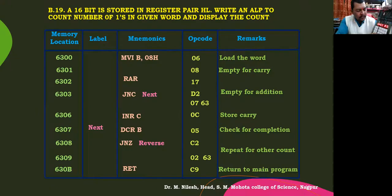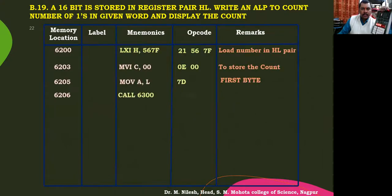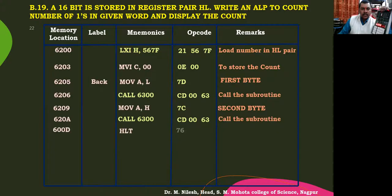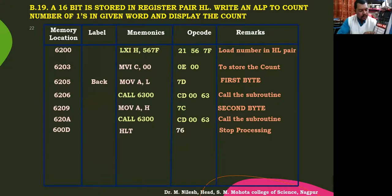Then the main program is to be written from memory location 6200. Reset, substitute memory 6200. This was the main program — it is the simplest program and we have just called the subroutine. So from 6200 we are loading this. We have loaded first the number — 56 and 7F. Then we have 0E, then 00 for the count, then 70 to move the first data. And we have CD 0063.